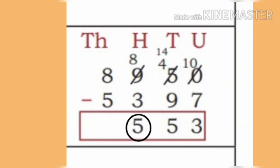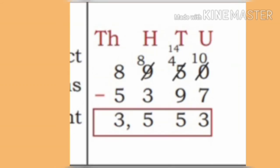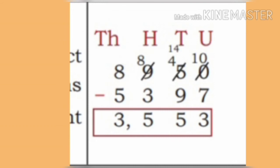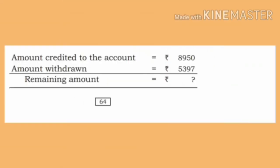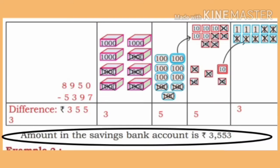Now next, in the Minuend at the thousands place, subtract 5 from 8,000 — then 3,000 remains. The remaining amount in the account is Rs. 3,553.